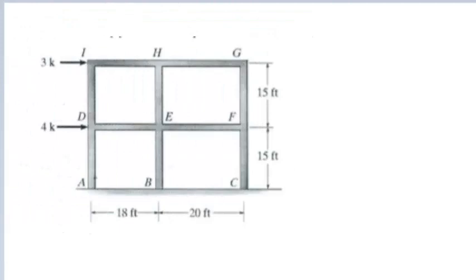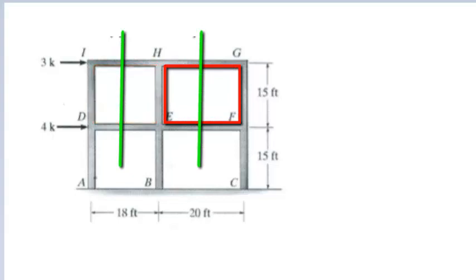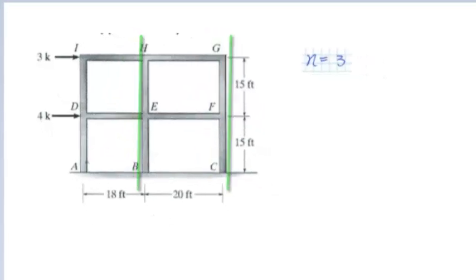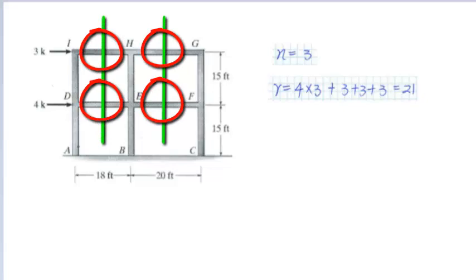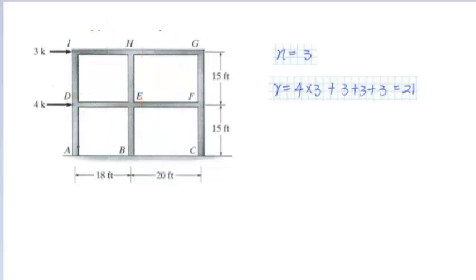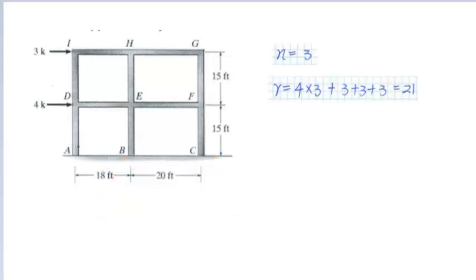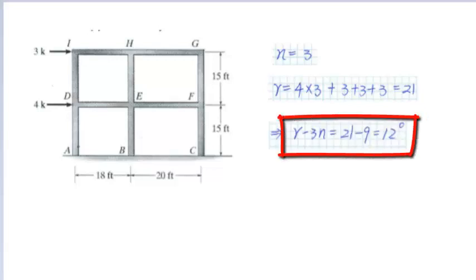Before solving the problem, we need to determine the degree of indeterminacy of this two-story moment frame, which equals r minus 3n. This frame contains closed loops, so we need to cut the loops open. After the cut, the frame breaks into three separate members, giving us n equals 3. The total number of reactions equals 4 cut sections times 3 reactions per section, plus 3 reactions at A, plus 3 at B, plus 3 at C, equals 21. The degree of indeterminacy, R minus 3n, equals 21 minus 3 times 3, equals 12.